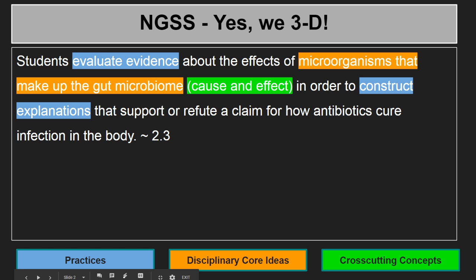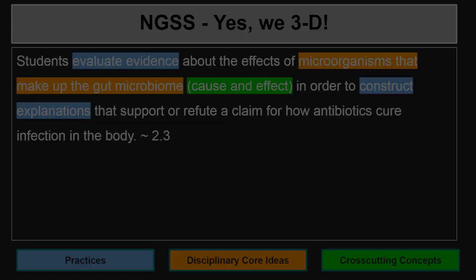Taking a look at the standards of our lesson, you're going to evaluate evidence about the effects of microorganisms that make up the gut microbiome, which is cause and effect, in order to construct explanations that support or refute a claim for how antibiotics cure infection in the body. And that's for section 2.3.